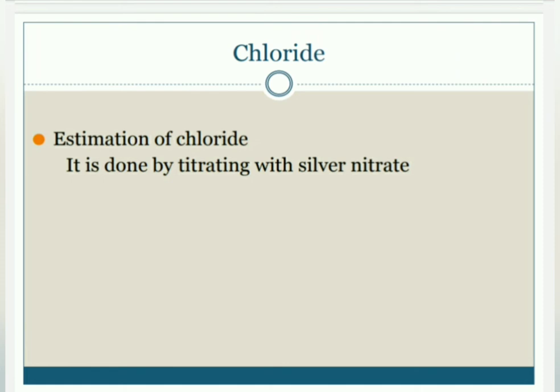When all the chloride is precipitated, potassium chromate shows a brick-red color at the end point due to the formation of silver chromate. Here, potassium chromate is the indicator.